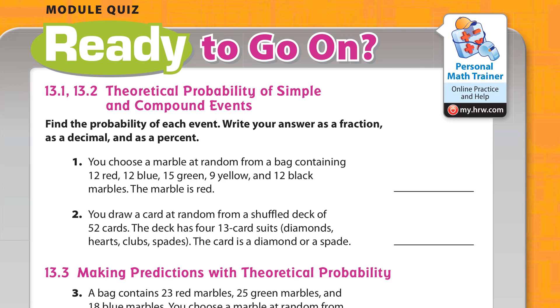We'll start here with you choose a marble at random from a bag containing 12 red, 12 blue, 15 green, 9 yellow, and 12 black marbles. The marble is red. So what's the probability that we'll choose a red marble?